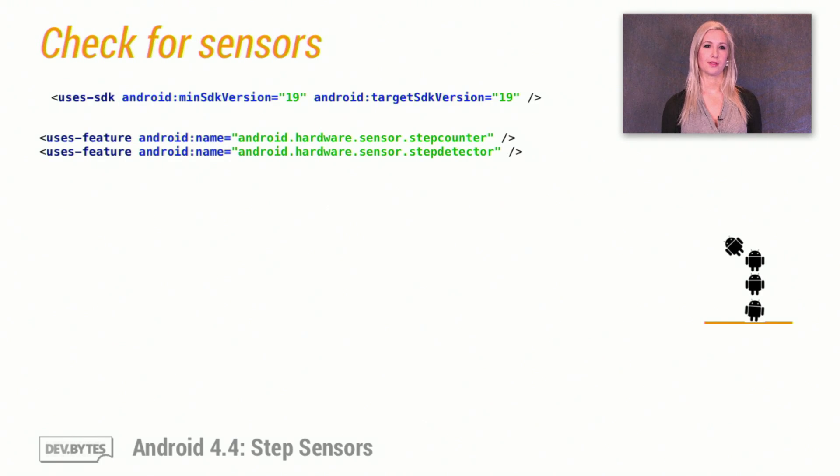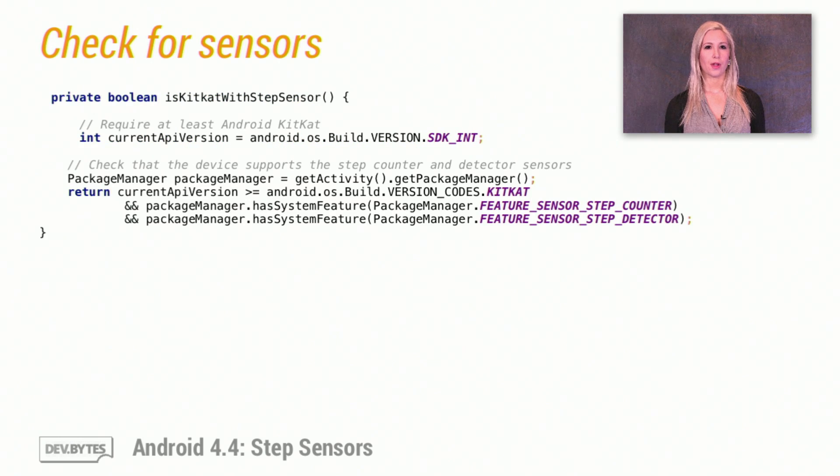So how do we use these sensors? First, check the device runs at least Android 4.4 and that it has the sensors we want. You can require the sensors and minimum API level in the manifest. Or if your app can work without the step sensors, you can check programmatically for them using the package manager.